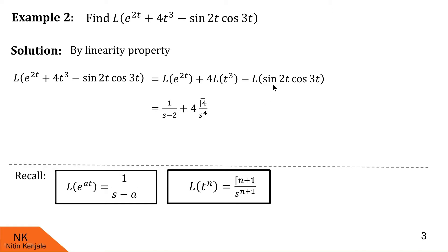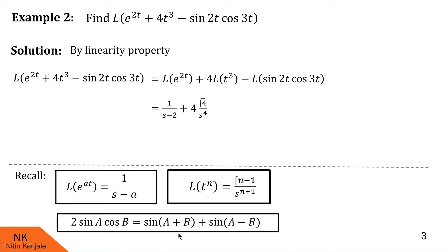Now for Laplace of sin2t·cos3t, we have to split these two functions. I recall the trigonometric identity: 2·sin(a)·cos(b) = sin(a+b) + sin(a−b). In our case, a = 2t and b = 3t. So sin2t·cos3t = [sin(5t) + sin(−t)] / 2.